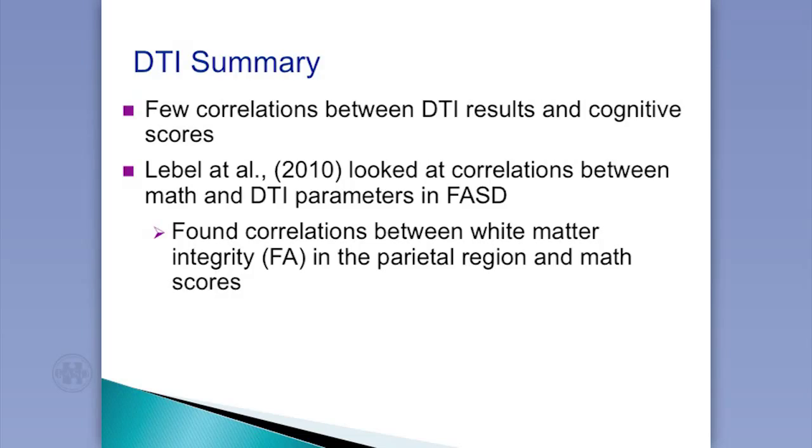We didn't actually see many correlations between cognitive scores and the brain imaging results. That doesn't mean they're unrelated — cognition is controlled by the brain — but it's really difficult when you have so many tracks to figure out which ones relate to one specific cognitive skill. The tracks are probably involved in many different areas. We wanted to look further — we had whole-brain scans and a whole battery of tests but weren't seeing many correlations. What if we looked more specifically?